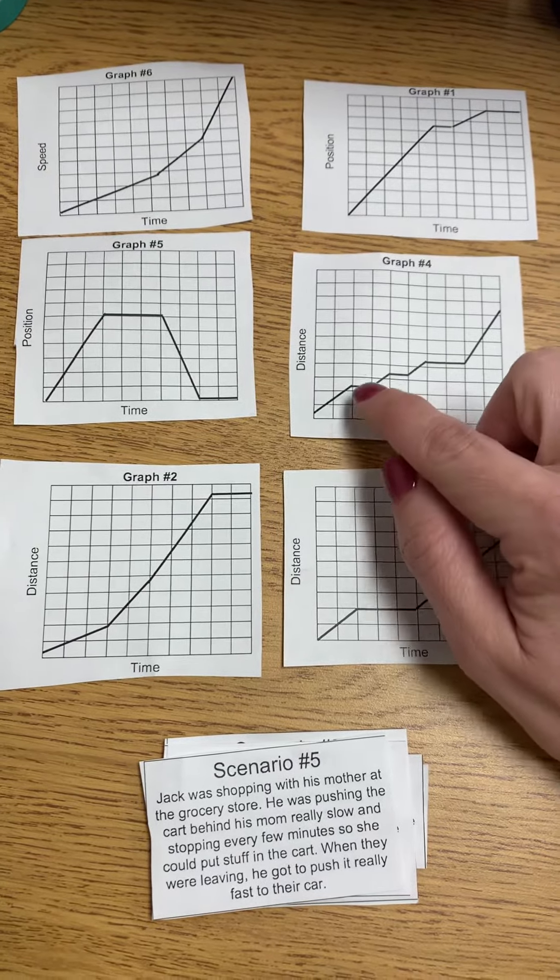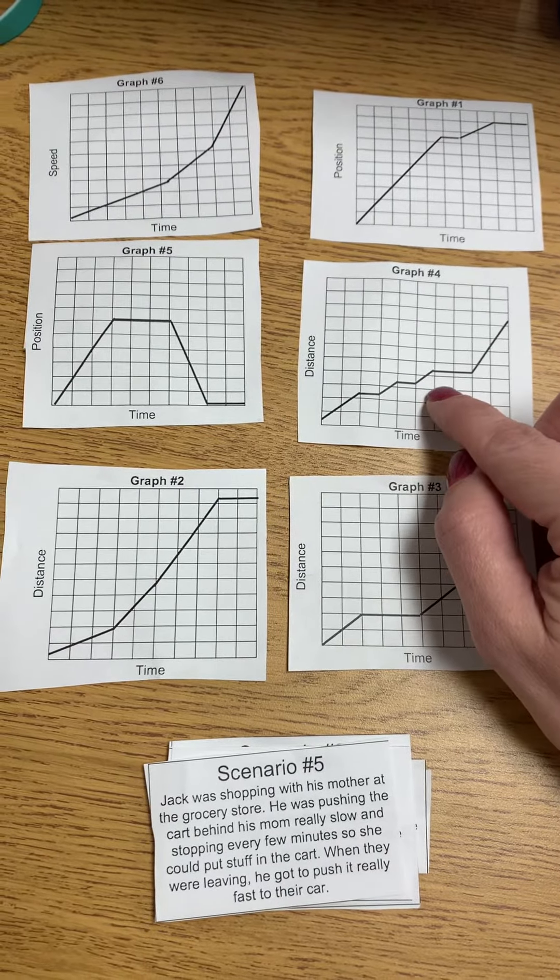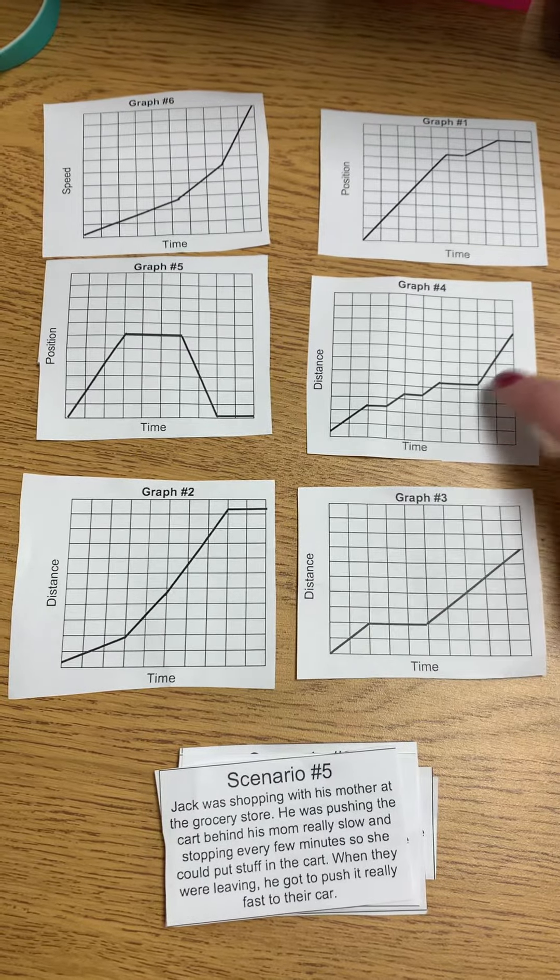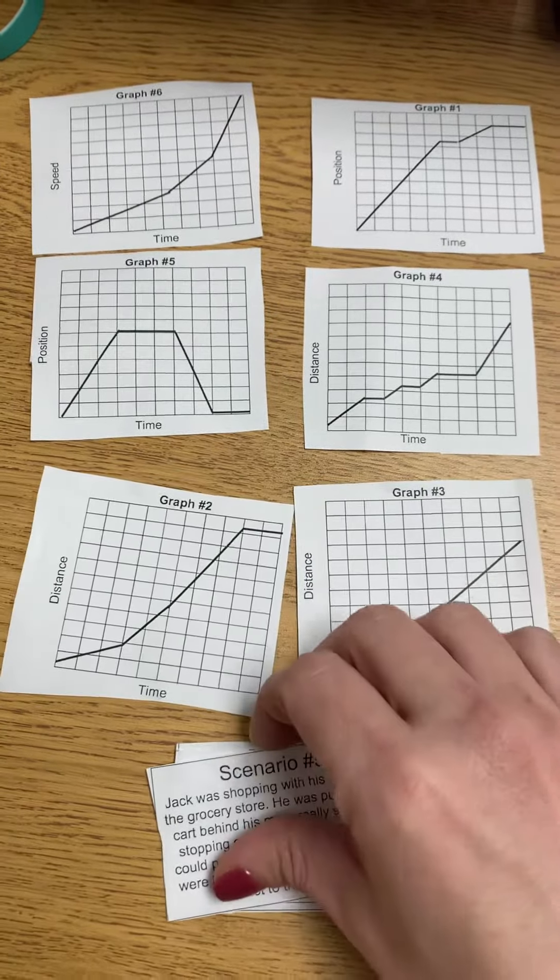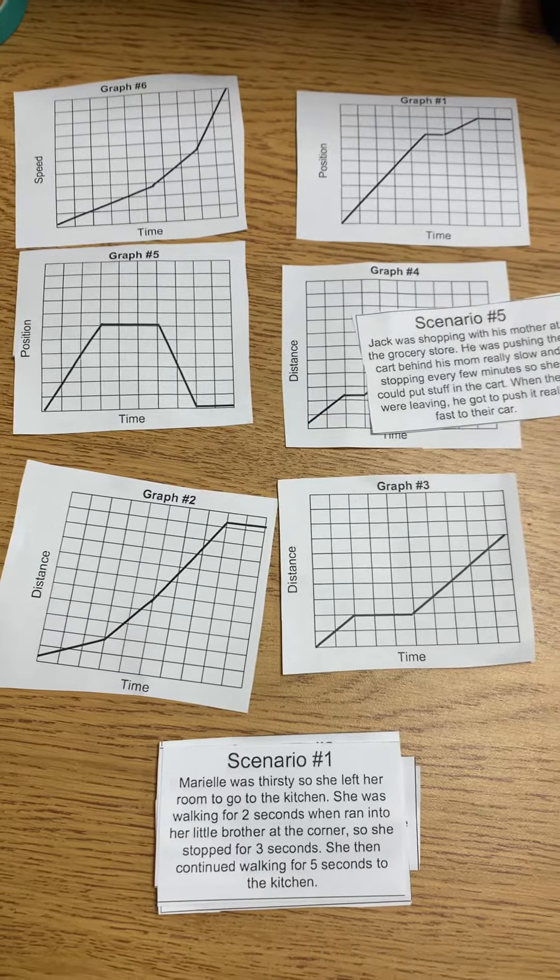This one. See, look how many horizontal lines there are. It's like every few minutes. Plus it also says he ran fast at the end. So scenario five would go with graph number four.